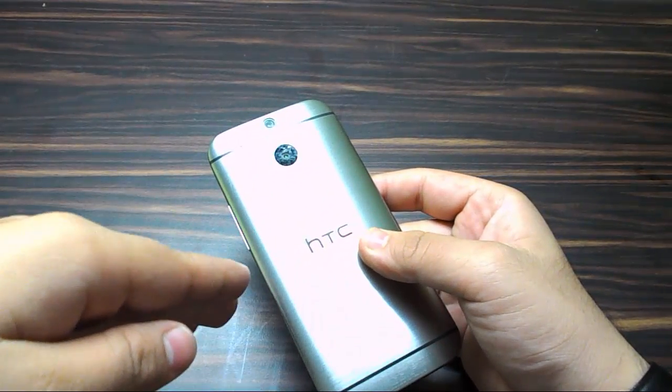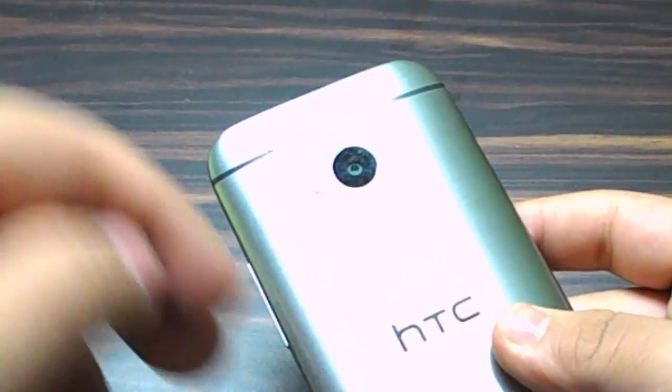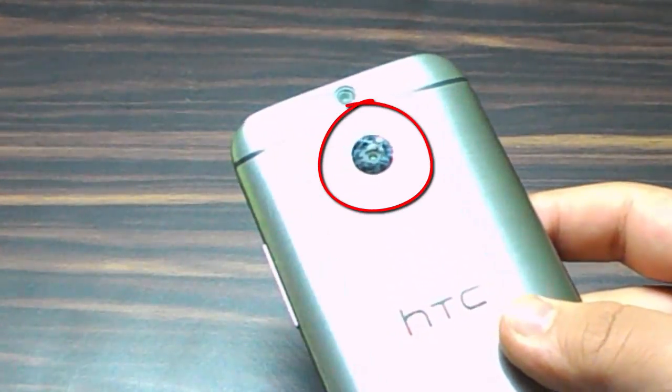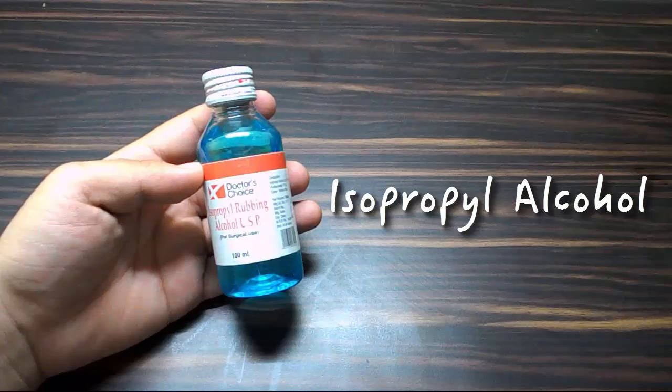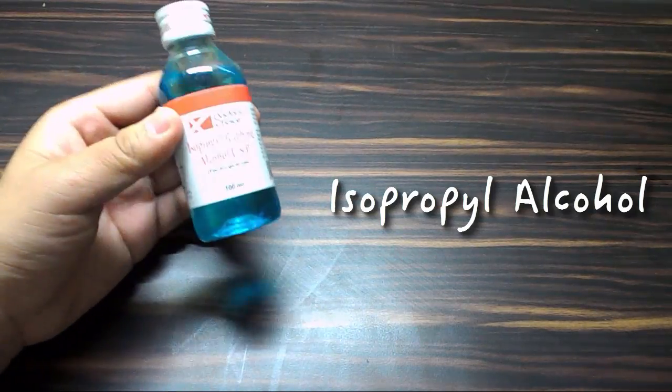Actually you can avoid it by keeping it really safe. I tried it myself, but still these magic scratches appeared out of nowhere. So for this, all you need is a bottle of IPA - that is isopropyl alcohol. Really cheap, I got this for 40 bucks.